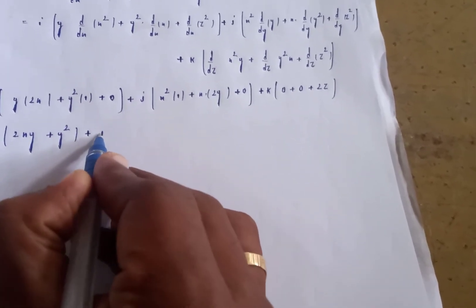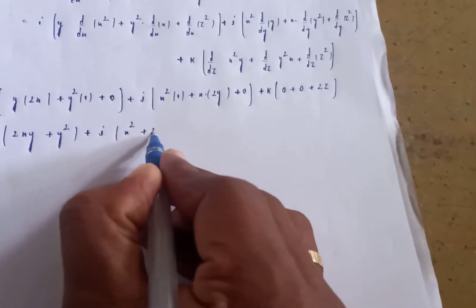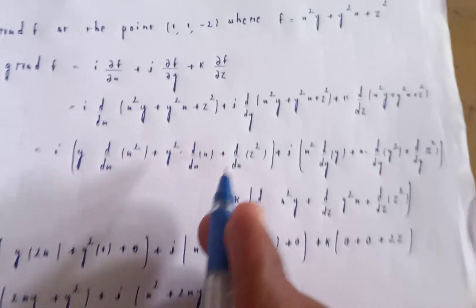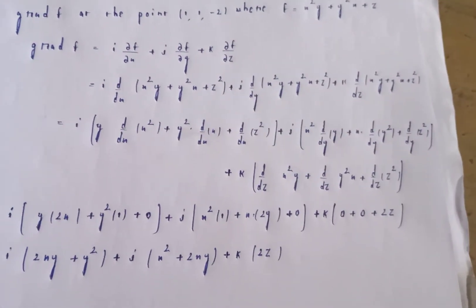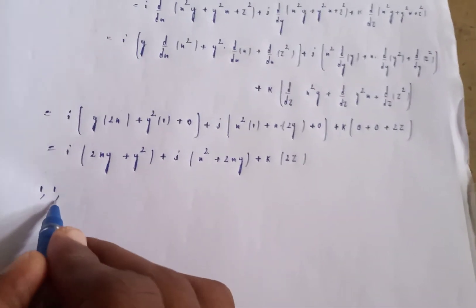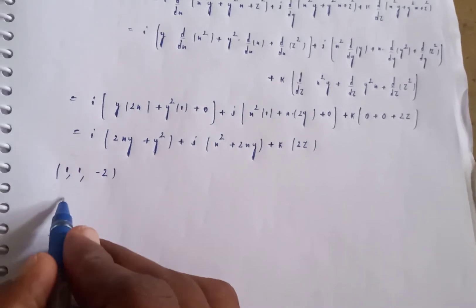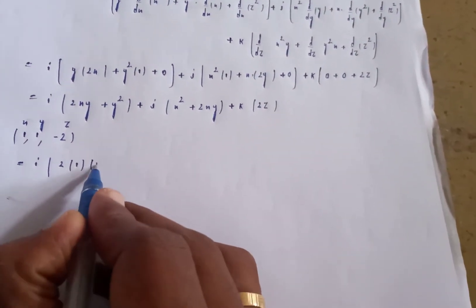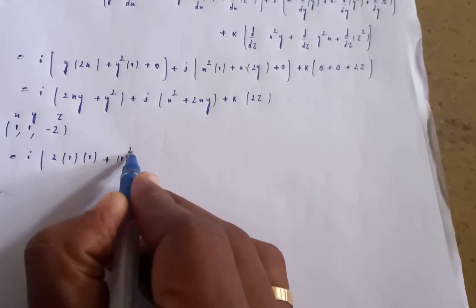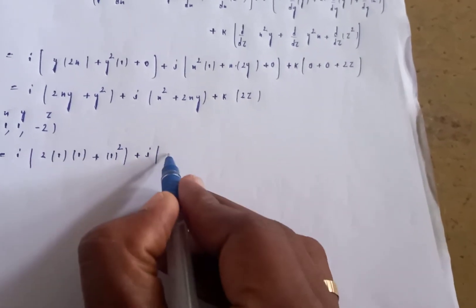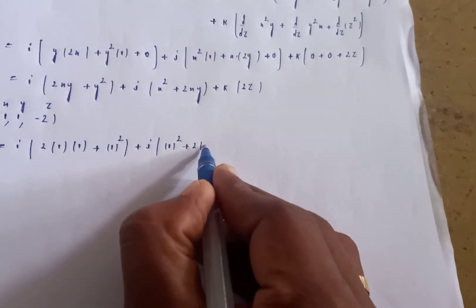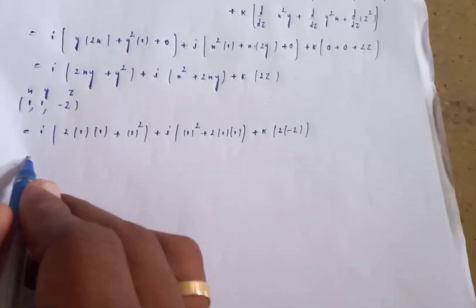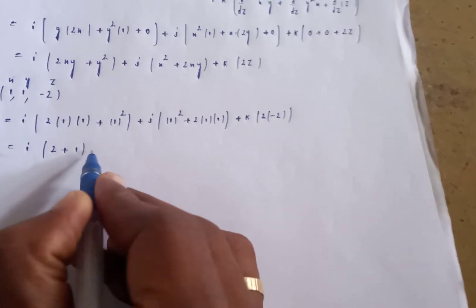Now substitute the point (1, 1, -2). That's i times (2 times 1 times 1 + 1²) plus j times (1² + 2 times 1 times 1) plus k times (2 times -2).